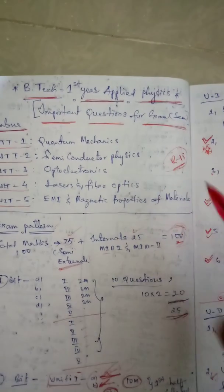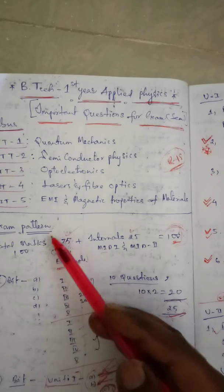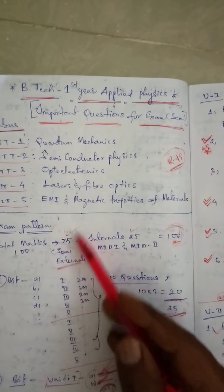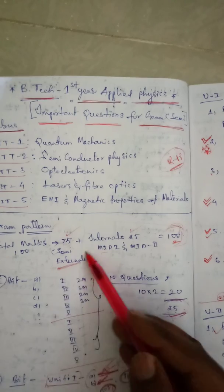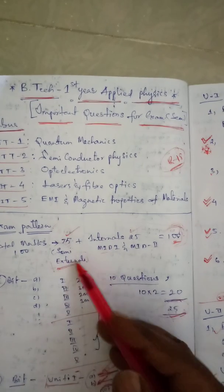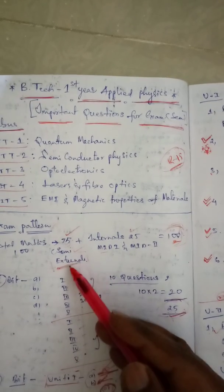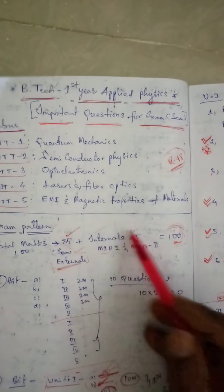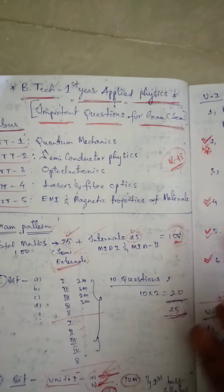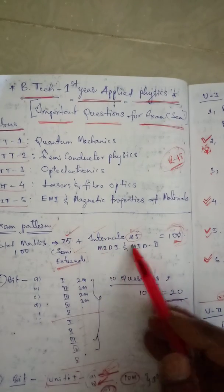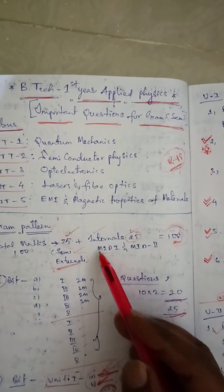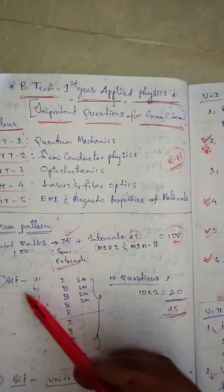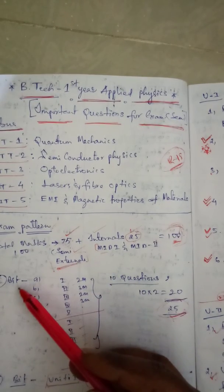If you see the exam pattern or paper pattern, there are 75 marks total — the external exam is conducted for 75 marks, semester one, two, three, etc. The remaining internal will be conducted for 25 marks. Internal includes mid-one, mid-two, and assignments — total 100 marks.